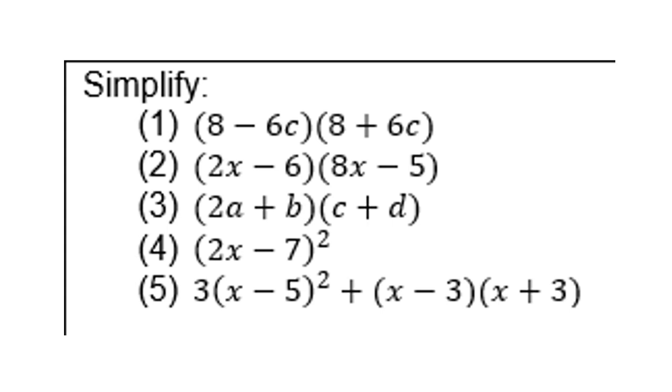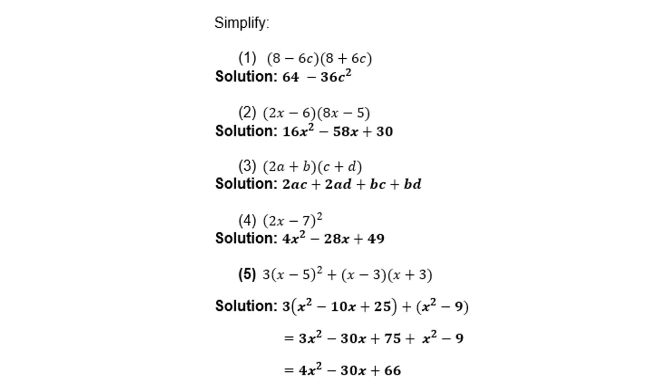And this is a little exercise which you can try on your own. The solutions are on the next page. Here's your solutions. So (8 - 6c)(8 + 6c) gives you 64 - 36c². (2x - 6)(8x - 5) will give you 16x² - 58x + 30. Number 3: (2a + b)(c + d) will give you 2ac + 2ad + bc + bd. Number 4: (2x - 7)² will give you 4x² - 28x + 49. And number 5 will give you 3(x² - 10x + 25) + (x² - 9). Get rid of the brackets, collect your like terms, and the answer is 4x² - 30x + 66.